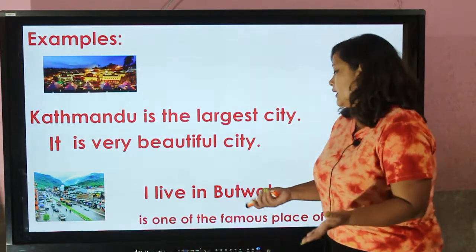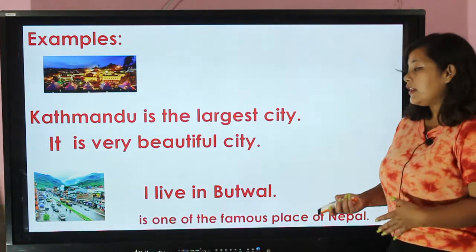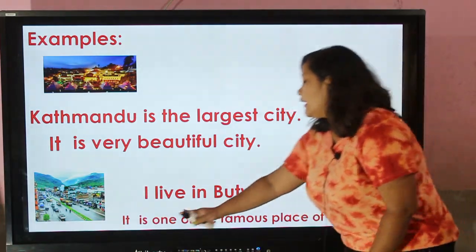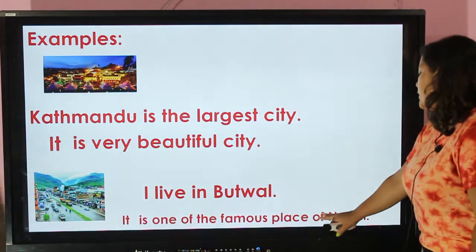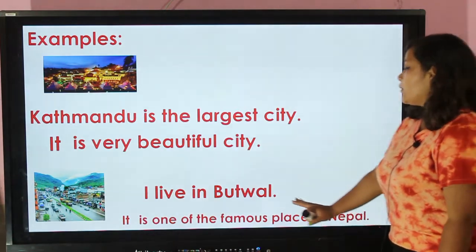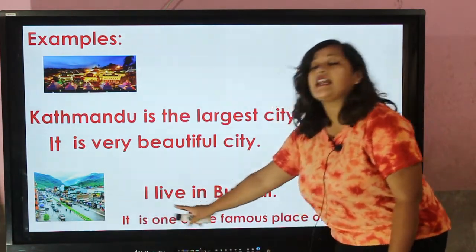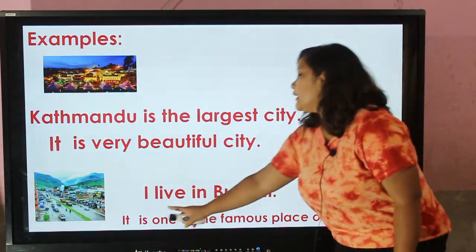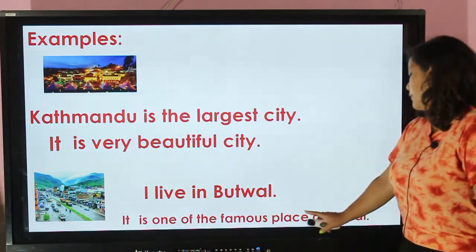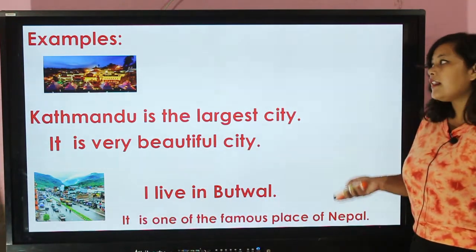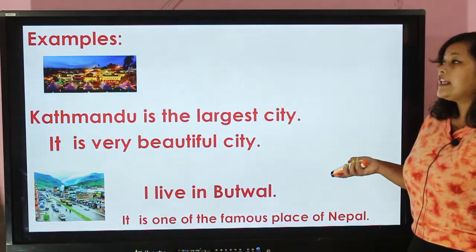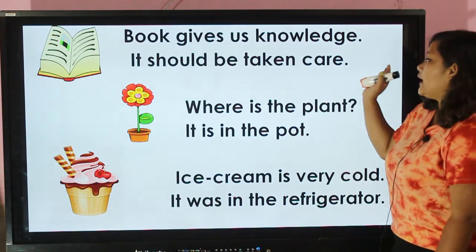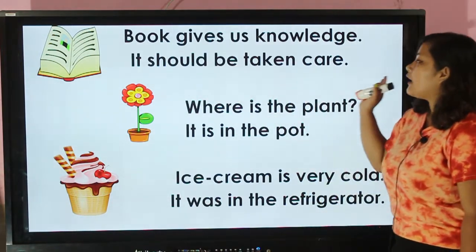Let's go to another example: 'I live in Butwal.' What are we going to write to represent Butwal? Yes, we are going to write 'it'. The pronoun 'it' is one of the famous places of Nepal. So 'it' indicates the place Butwal. 'I live in Butwal, it is one of the famous places of Nepal.'